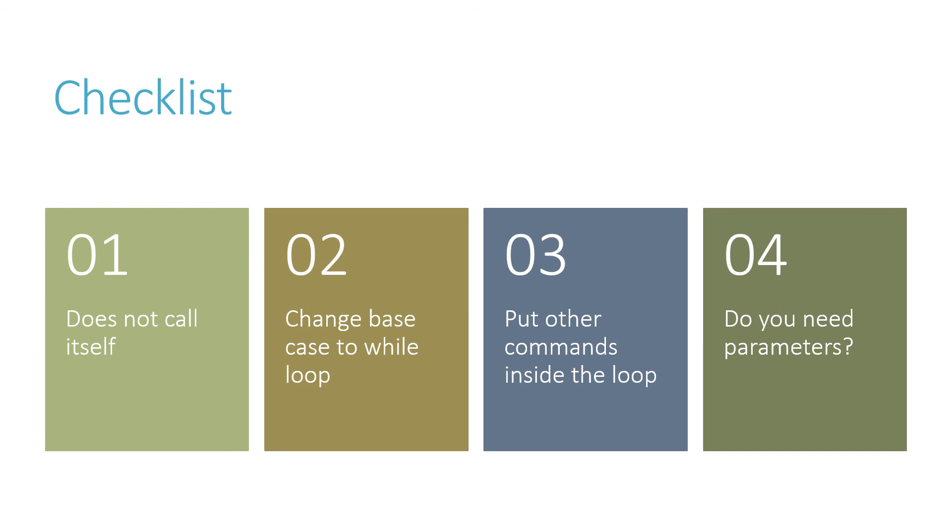So here's a checklist for converting a recursive function into an iterative function that uses a loop. Number one, make sure that the function does not call itself. Secondly, change the base case into the first line of a while loop. Put the other commands inside that loop and think about whether you need parameters or not. Sometimes you will, sometimes you won't.